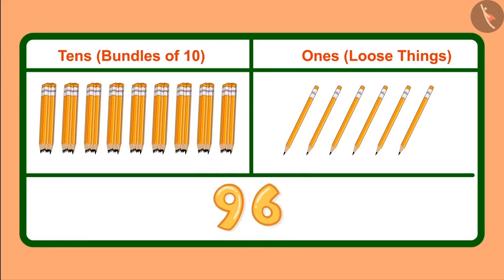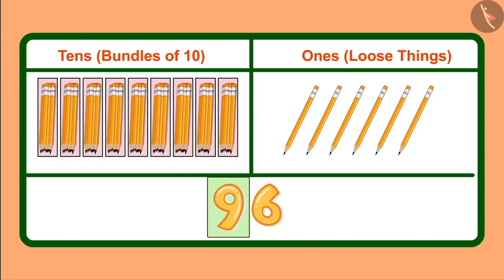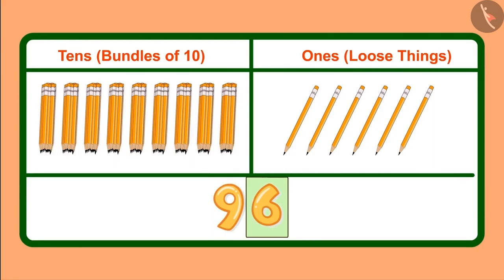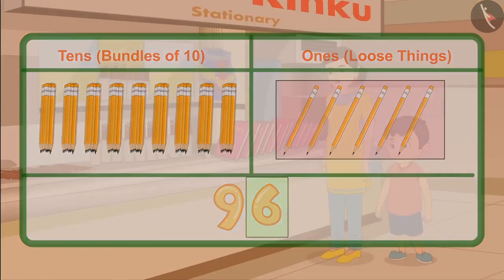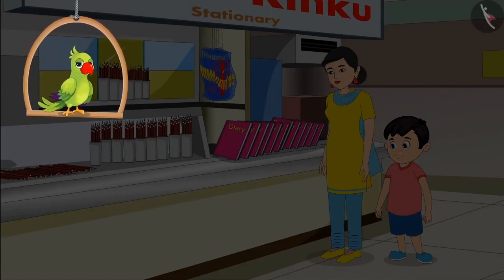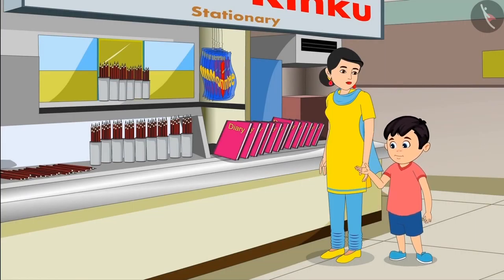Children, we write ninety-six like this. And in this, nine is in the tens place and six in ones place. It means we have nine tens, which we can also call nine bundles of tens. And along with it, six ones means six loose pencils.